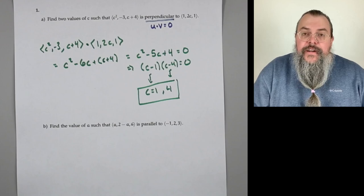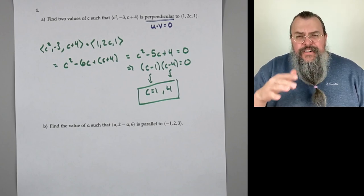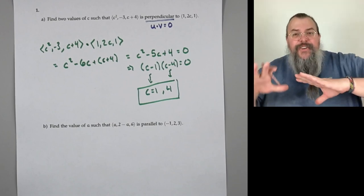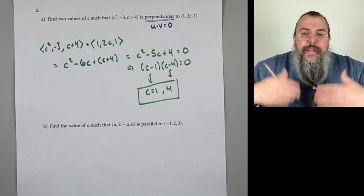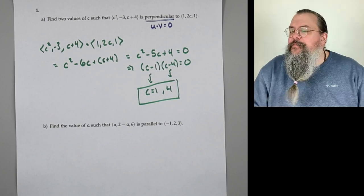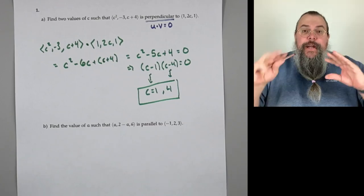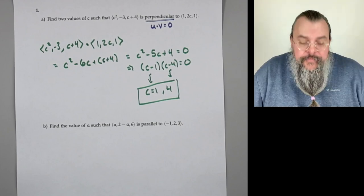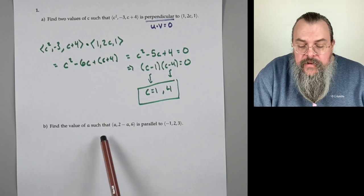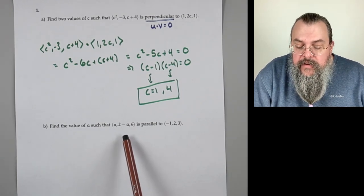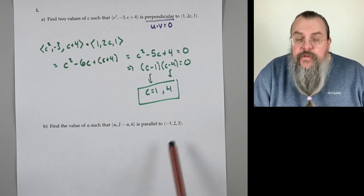That's a nice start. You always want to start off with an easier problem, and generally speaking, that is how they try to order problems — they give you a good one to get the math juices flowing, and the ones at the end are the harder ones. Now Part B: find the value of the number A such that the vector ⟨A, 2-A, 6⟩ is parallel to ⟨-1, 2, 3⟩.